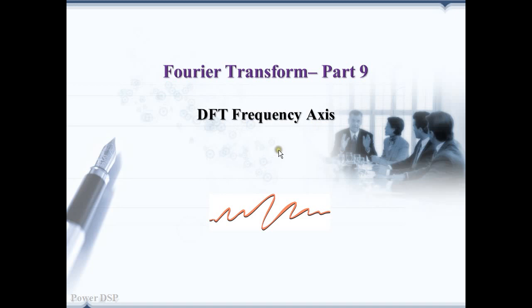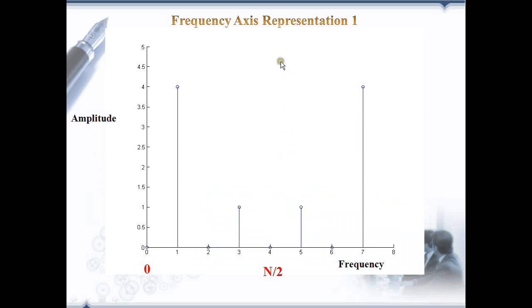We can represent the frequency axis in four different ways, all of which are common in DSP. In the first method, the frequency axis is labeled with the sample numbers. As we know, n input samples will produce n output samples, in which the useful information is present from 0 to n by 2.